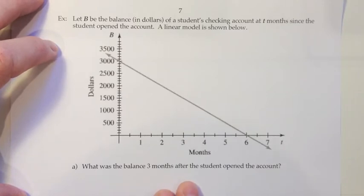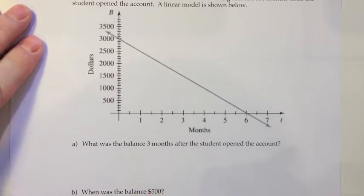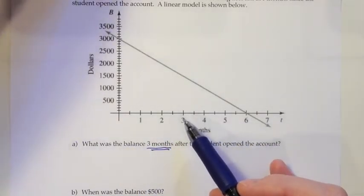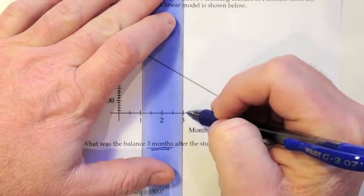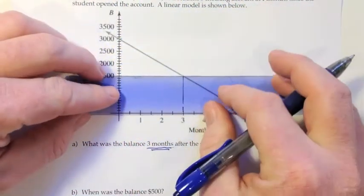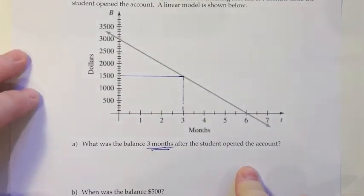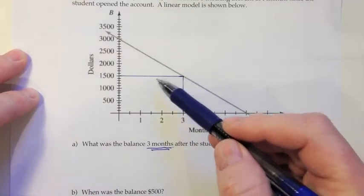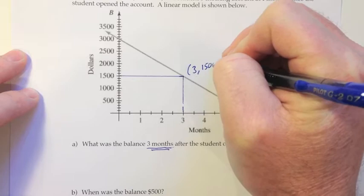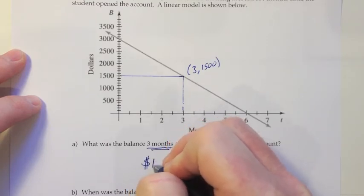So let's look at the questions they have for us. The first one is, what was the balance three months after the student opened the account? So what we'd want to do there is three months is a time. So we want to go onto the time axis and find that three. Since this graph doesn't have the grid lines that the other one did, I'm using a straight edge to help draw a little bit better lines of what's going on. And it appears that when t is 3, the balance in the account is about $1,500. So what is the balance three months after the student opened the account? It appears that it would be $1,500.